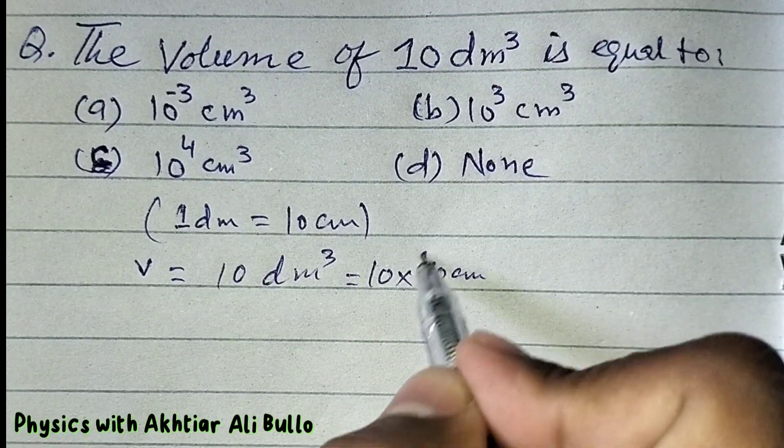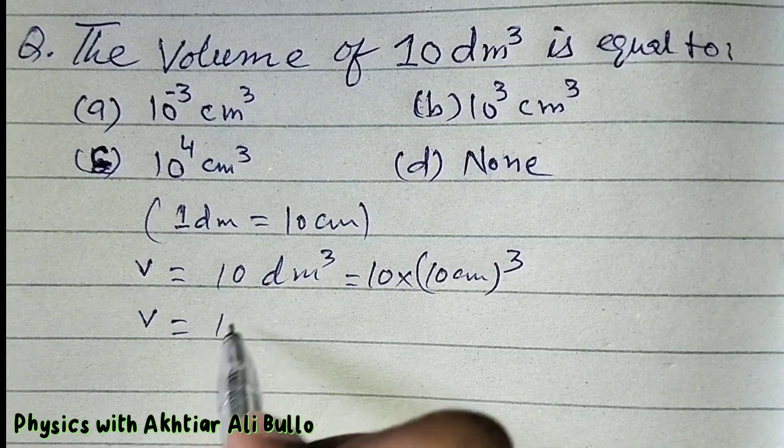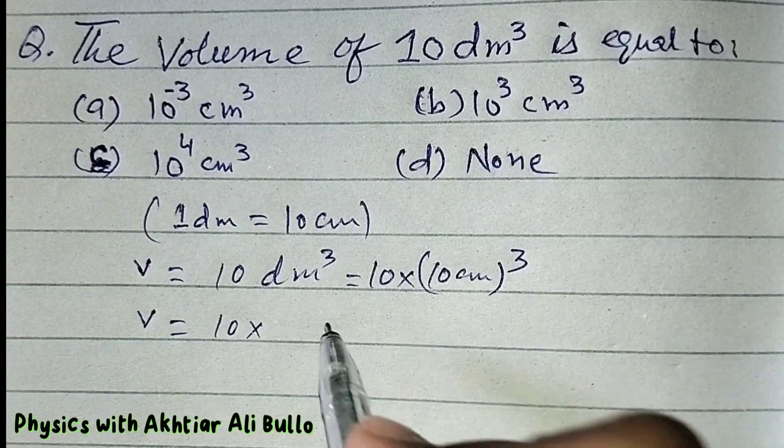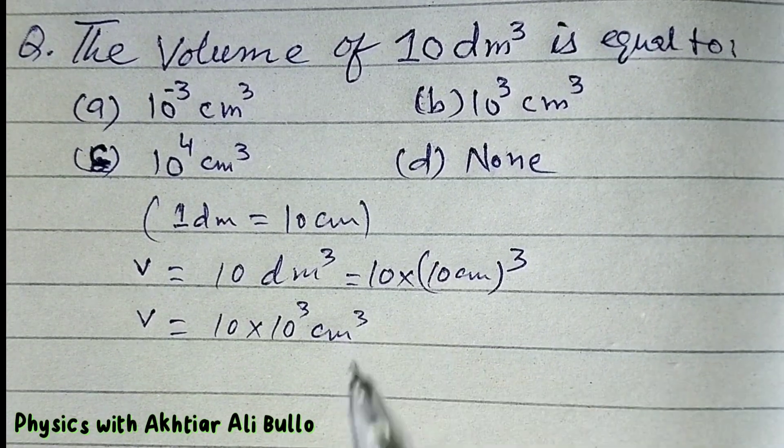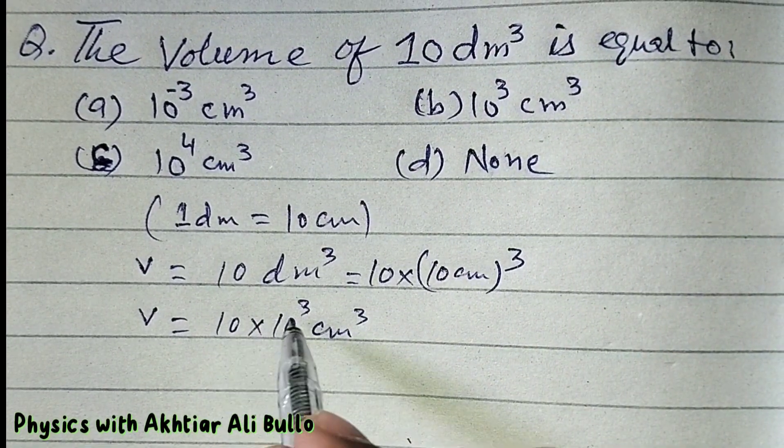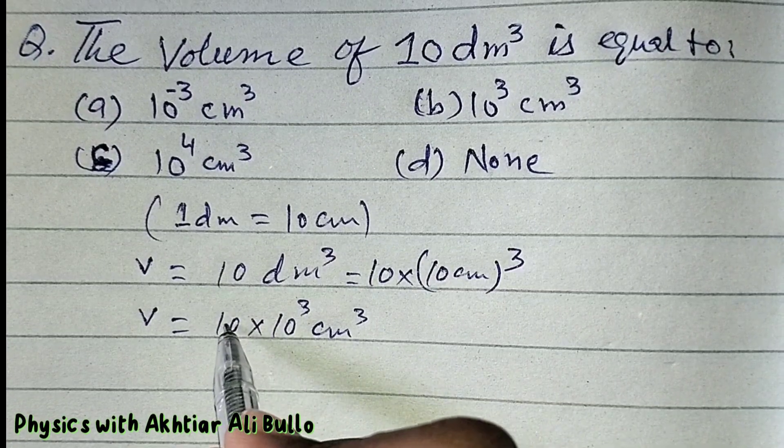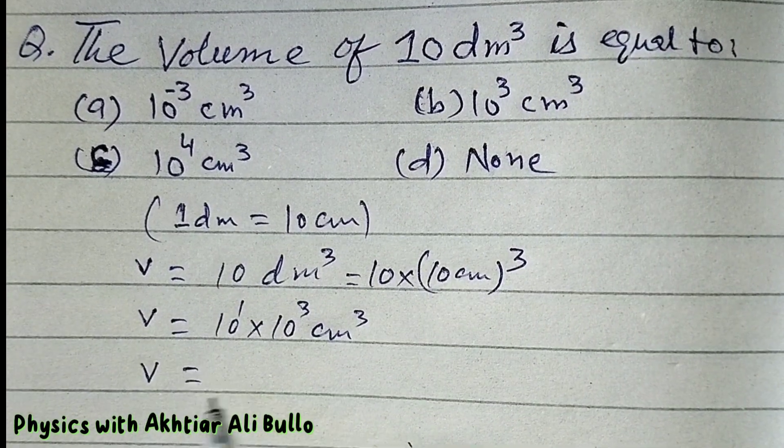centimeter whole cube. So the volume will be equal to 10 into 10 cube centimeter cube. When the bases are same then we will add the powers. The power on 10 is 1, so volume will be equal